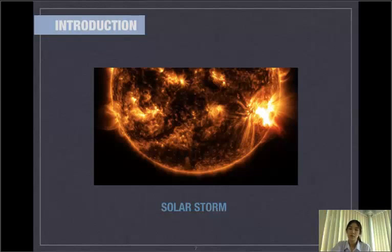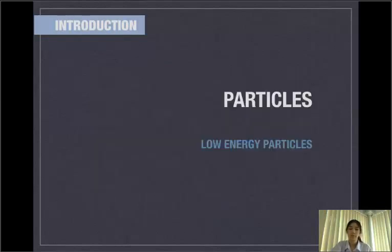But solar storm doesn't cause too much commotion on Earth. The particles can be distinguished by using the level of energy to low energy particles and high energy particles.